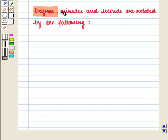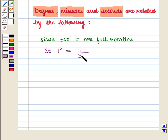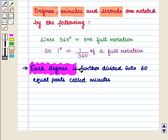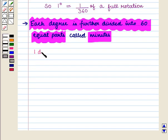Degrees, minutes and seconds are related by the following. Since 360 degrees is equal to one full rotation, one degree will be equal to one upon 360 of a full rotation. Also, each degree is further divided into 60 equal parts called minutes. That is, one degree is equal to 60 minutes, or one minute is equal to one by 60 degrees.